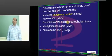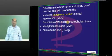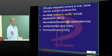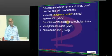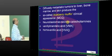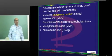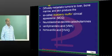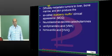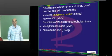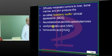Neuroblastoma can ultimately metastasize to the liver, to the skin, and to the bone marrow. Whenever it metastasizes, it produces what are called blueberry muffin lesions — classical of neuroblastoma.